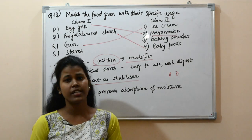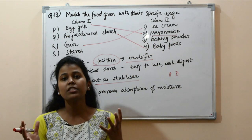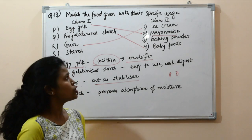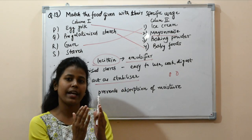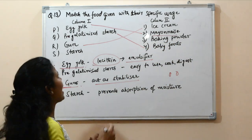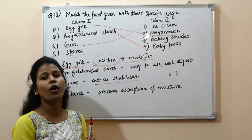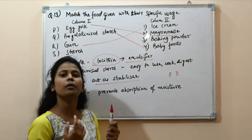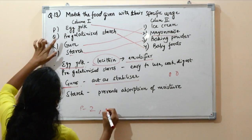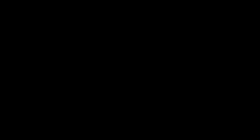The last component is starch, used in baking powder. Baking powder is a leavening agent composed of an acid and a base, which react in the presence of water to produce carbon dioxide. To prevent this reaction during storage and transportation, starch is added to baking powder to absorb moisture from the surroundings. This prevents premature reaction between the acid and base. The answer is P2 Q4 R1 S3, option A.